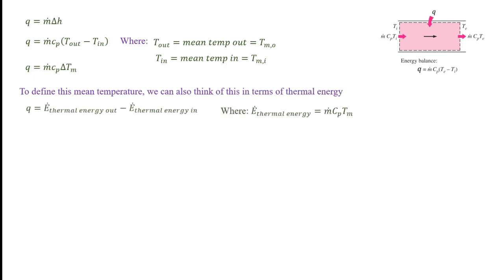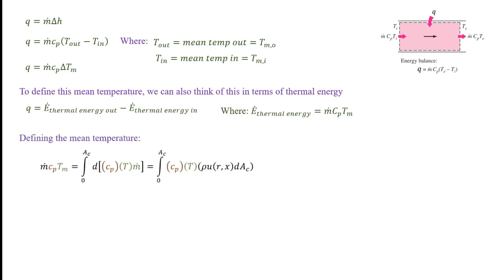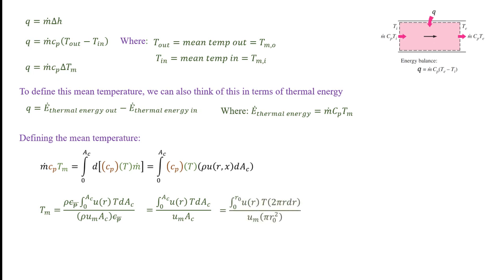To get an expression for the mean temperatures at the inlet and the outlet, we think in terms of the rate of thermal energy going into and out of the control volume. We define the mean temperature as the integral of d(ṁ) times Cp times temperature, putting the mass flow rate in terms of density and velocity, which is a function of r and x, and the differential cross sectional area. Defining the derivative of cross sectional area as 2πr dr and the area as πr₀², we arrive at an expression for the mean temperature related to the velocity profile.